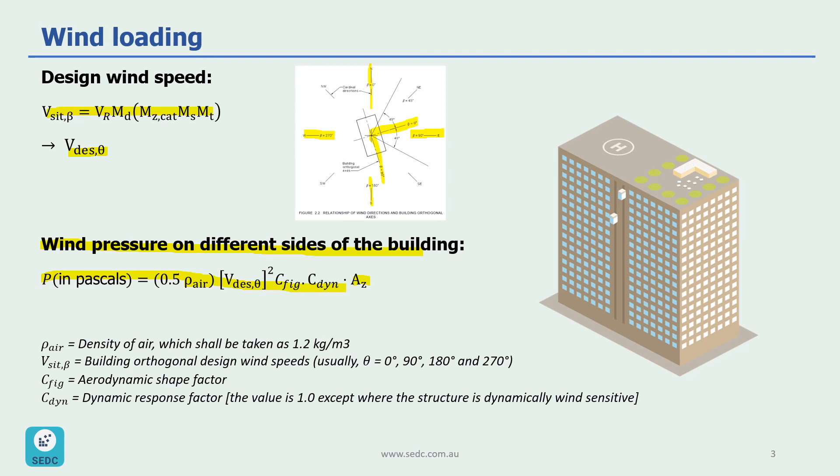So what we need to do in here is to calculate this wind pressure on different sides of this building. For example, if the wind is applied in this direction, then we have windward pressure applied on this side of the building. Then we have leeward pressure on the rear side of the building, and then we have side wall pressures. And finally, we have roof pressure which we need to calculate. Each one of these pressures have their own parameters and factors that we need to calculate.